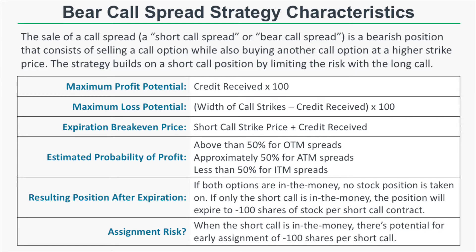The estimated probability of profit for a bear call spread is greater than 50% for out-of-the-money spreads, approximately 50% for at-the-money spreads, and less than 50% for in-the-money spreads. We'll go over some examples to show you what that really means.